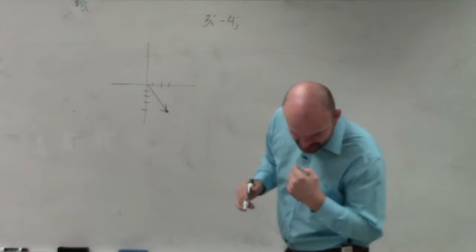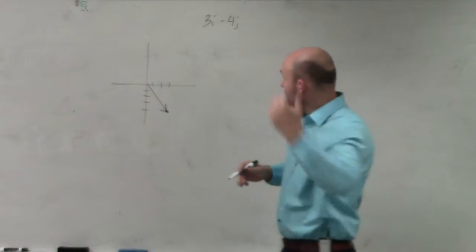That's my vector. What was this vector called? They didn't say. They just gave us 3i minus 4j.